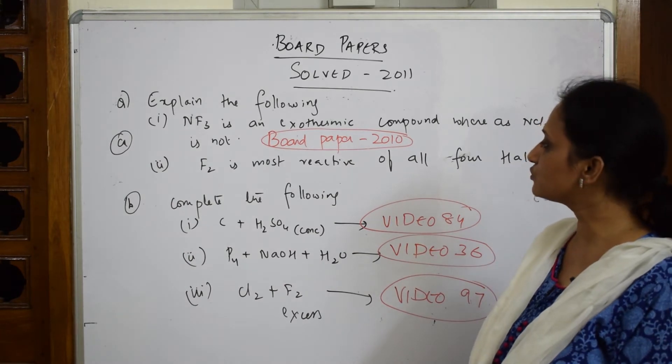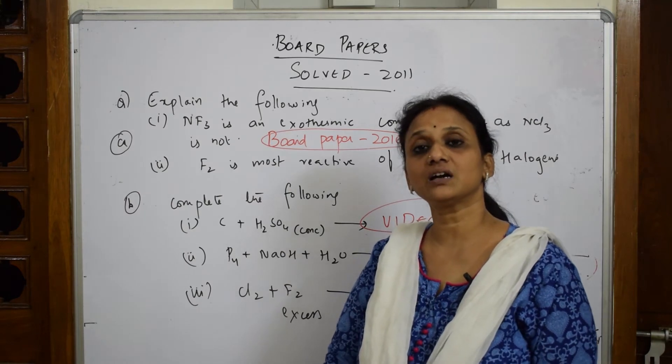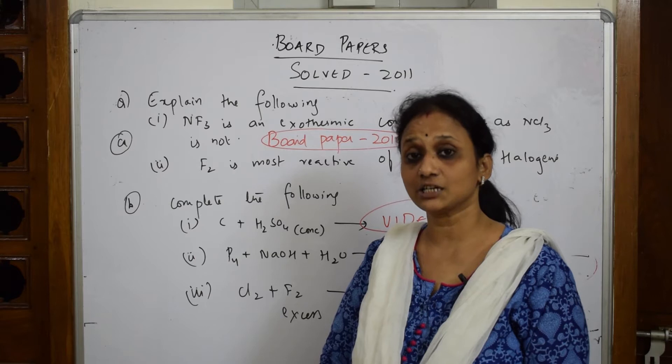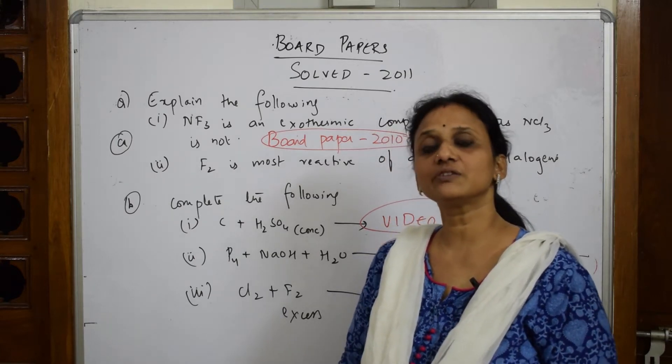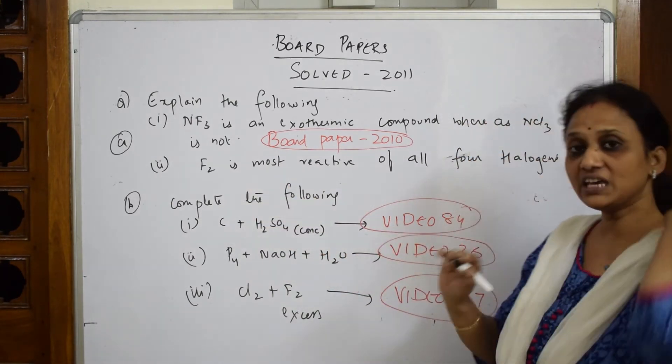Next: fluorine is most reactive of all the four halogens. I did one video where I explained why halogens have more oxidizing properties and why fluorine is more oxidizing than chlorine. That video explains the concept, but here if you have to write only in terms of fluorine why it is more reactive, the keywords you should remember: